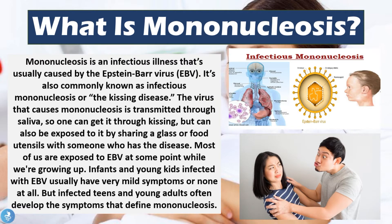Mononucleosis is an infectious illness that is usually caused by the Epstein-Barr virus, also commonly known as EBV. The disease itself is also commonly known as infectious mononucleosis or the kissing disease. The virus is transmitted through saliva, so one can get it through kissing, but can also be exposed to it by sharing a glass or food utensils with someone who has the disease.